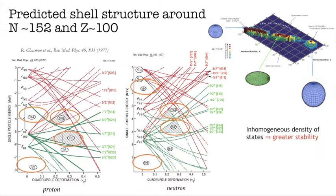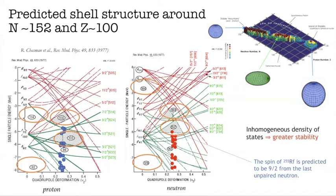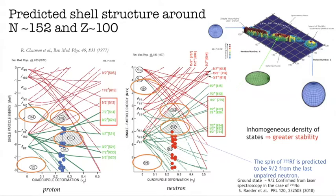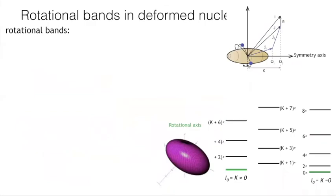In the case of Rf-255, we have 104 protons and 151 neutrons. If we fill them in their respective orbitals, because of pairing the ground state is predicted to be 9/2− from the last odd neutron. Indeed, this was measured experimentally from laser spectroscopy in the case of Lr-253. I have marked the relevant orbitals for this nucleus. Since this nucleus is deformed we expect it to rotate, and rotational bands are formed on the single particle states.